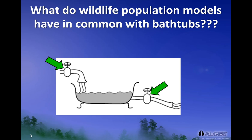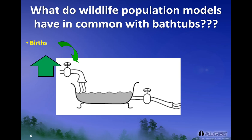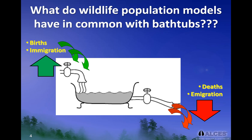The analogy to wildlife is to think of the amount of water within the tub as a wildlife population. In this context, the only way for a population to increase is through births of babies or through immigration as an inflow. And the only way for a population to decrease is for animals to leave because they have died or they have emigrated out, shown here as an outflow from the tub.